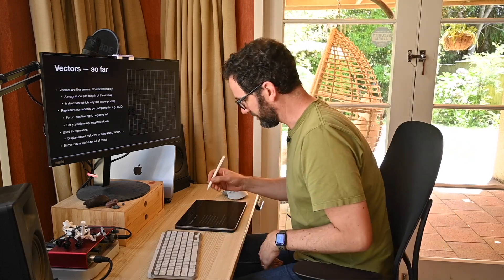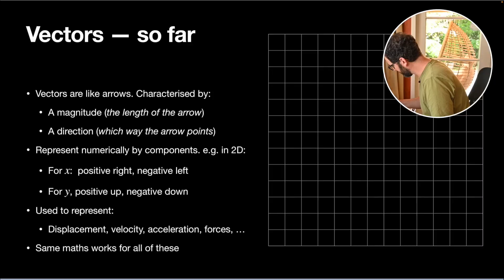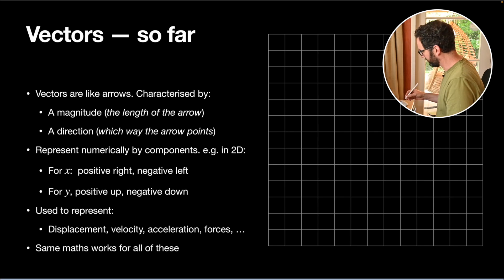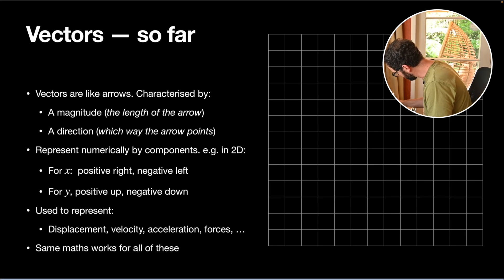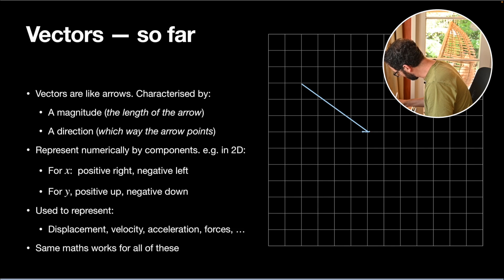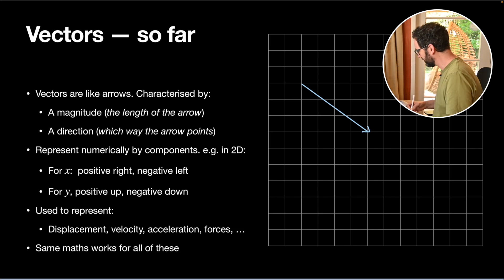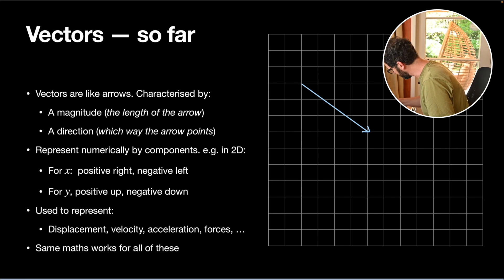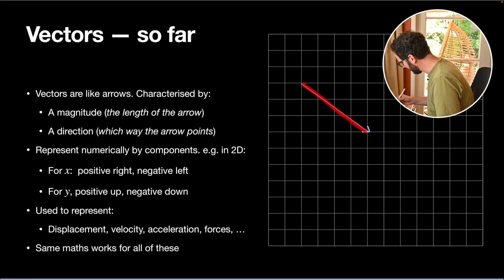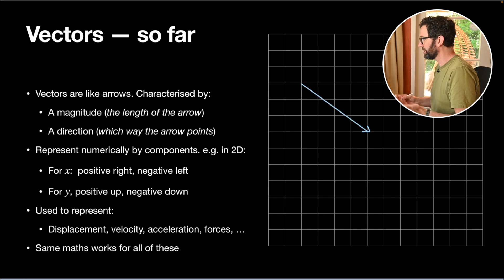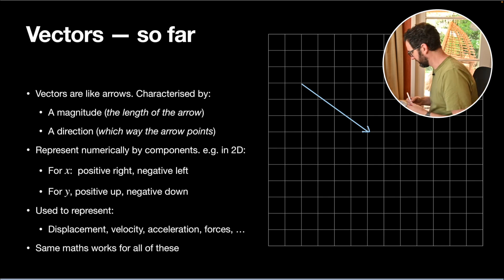What we know so far about vectors is that we can essentially think of a vector as an arrow. The things that characterise a vector are that it has a certain length, and it is also pointing in a particular direction.